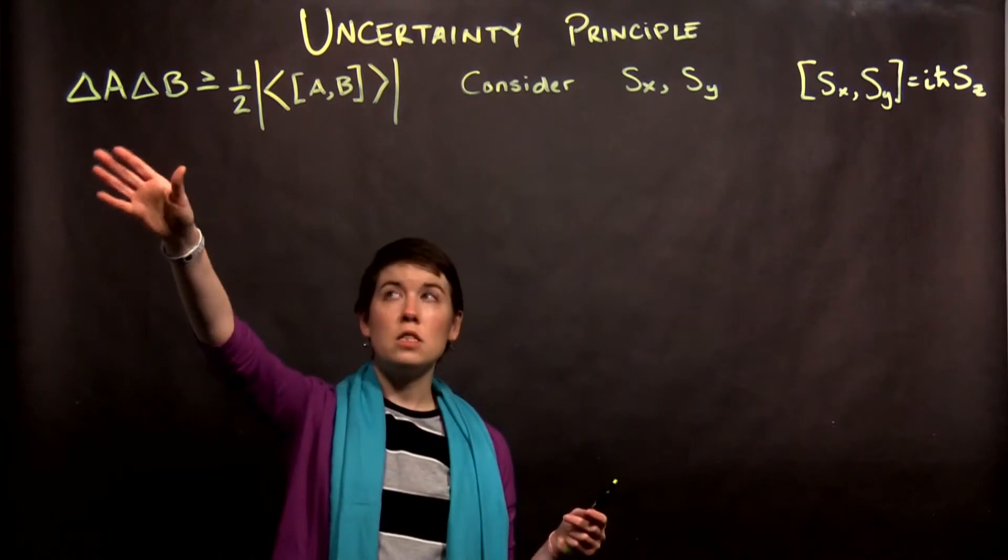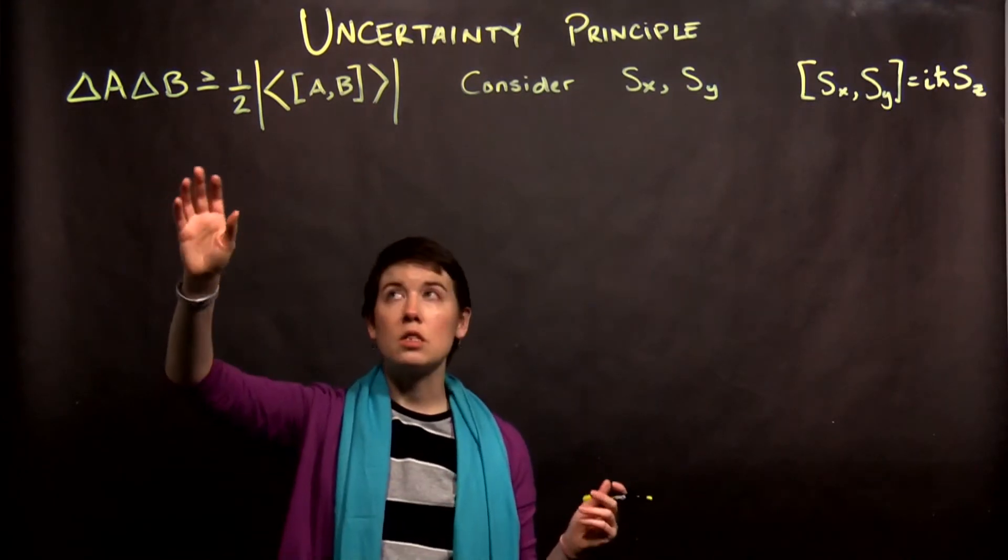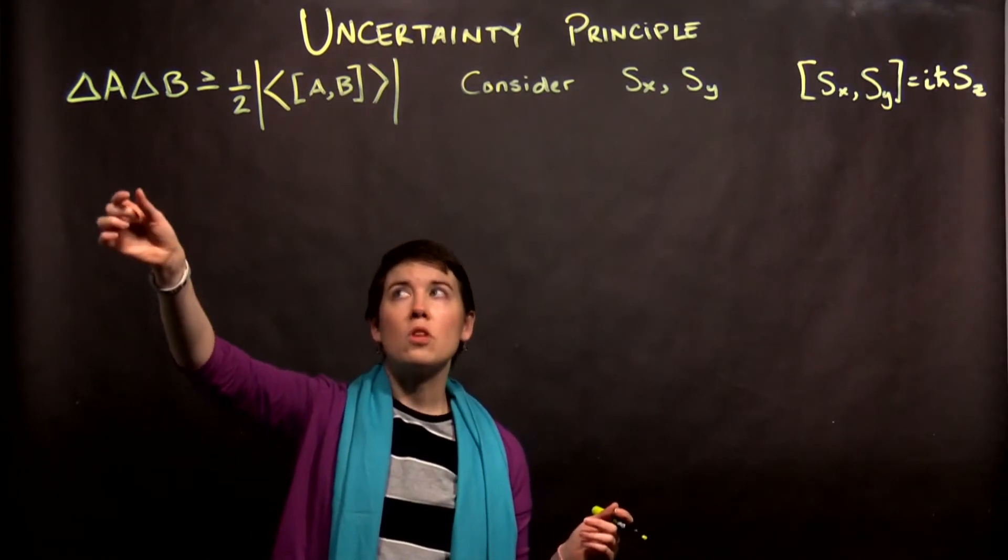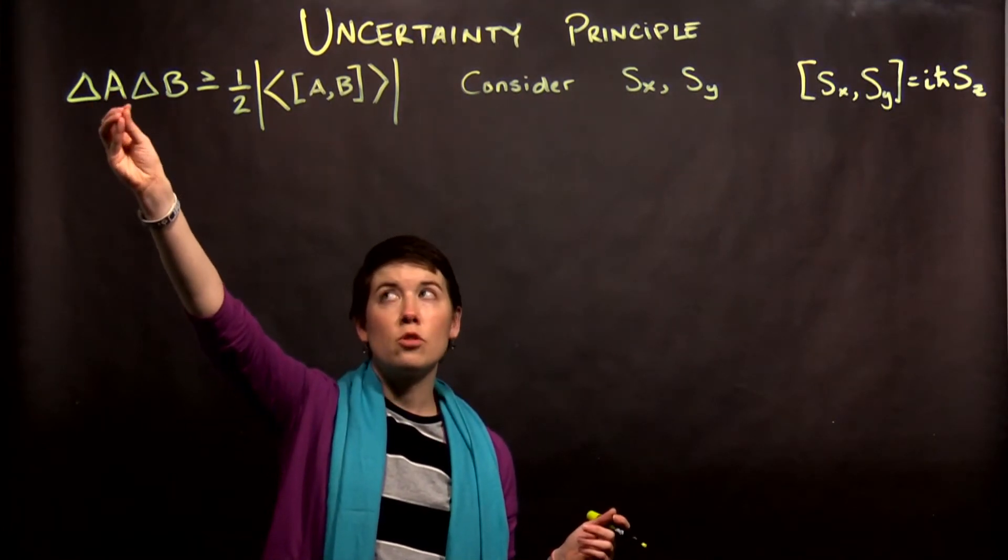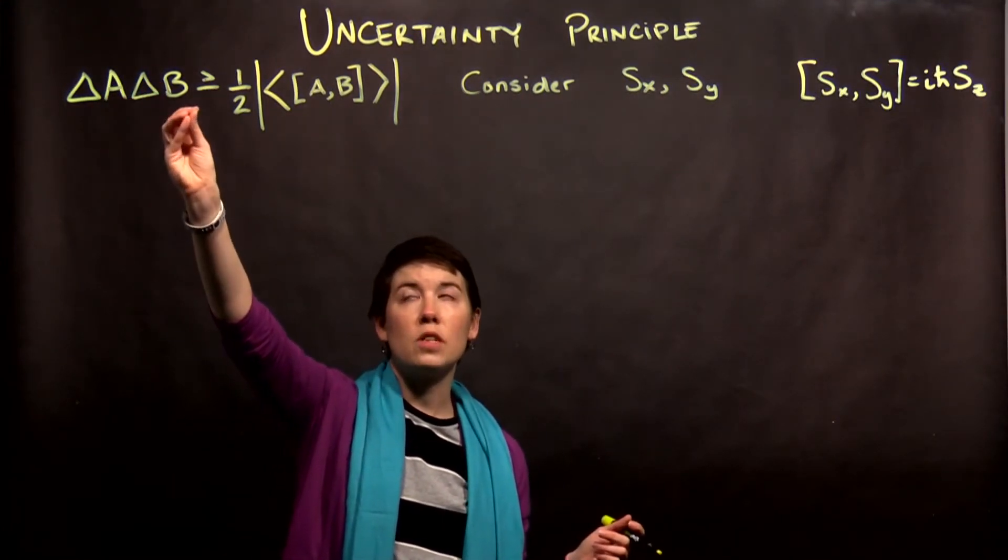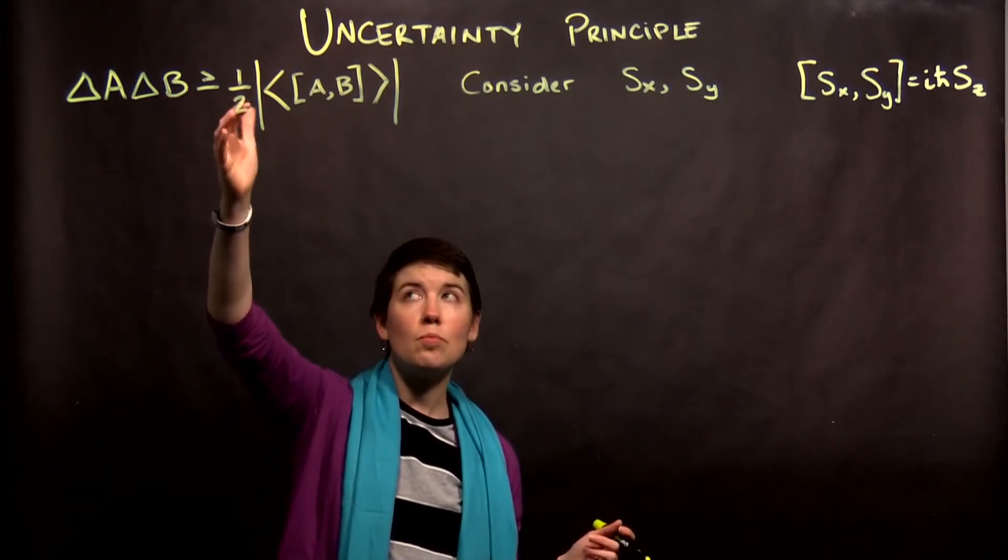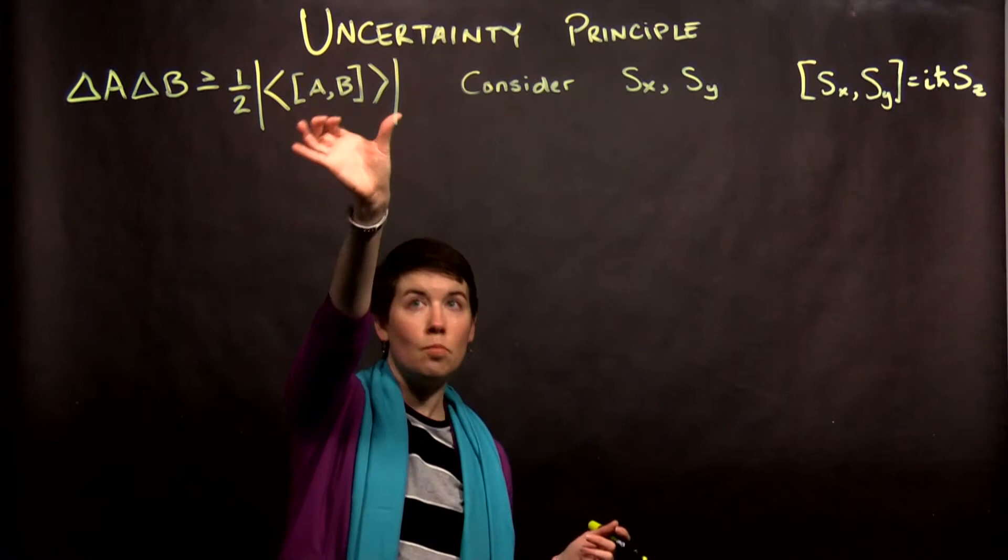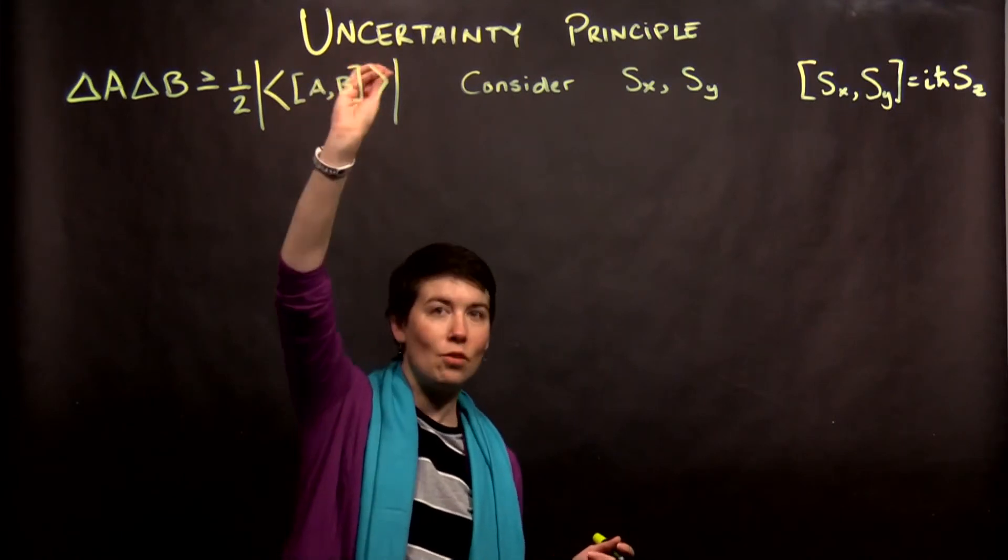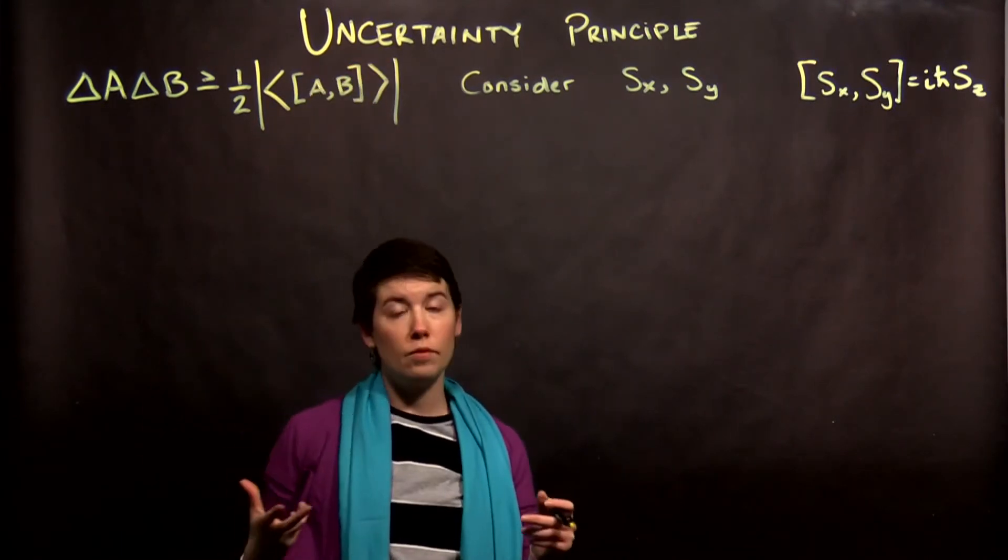So this is how we're writing the uncertainty principle in this class, and so we have to remember that this is going to be our RMS deviation for one operator, RMS deviation for another operator, and the idea being that this must be greater than or equal to one-half magnitude of the expectation value of the commutator of those two operators.